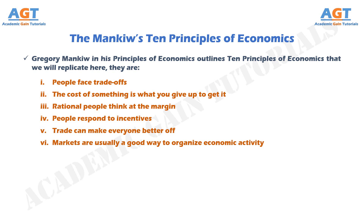Principle No. 7: Governments can sometimes improve market outcomes. Although markets are usually a good way to organize economic activity, this rule has some important exceptions. There are two broad reasons for a government to intervene in the economy: to promote efficiency and to promote equity. Most policies aim either to enlarge the economic pie or to change how the pie is divided.